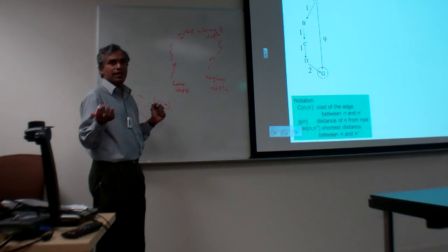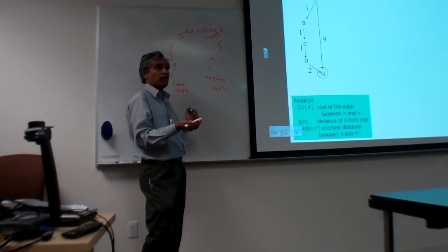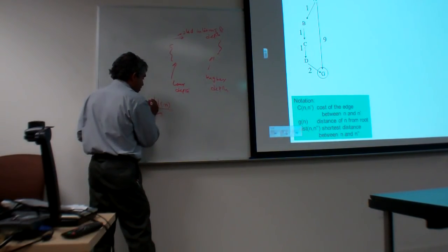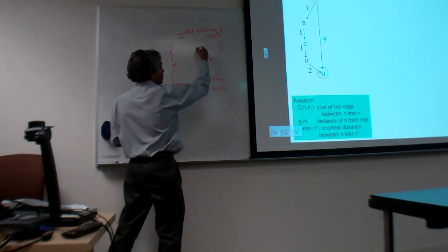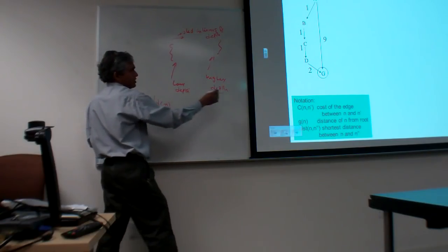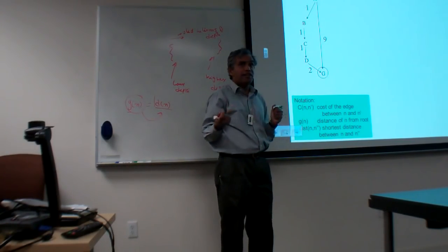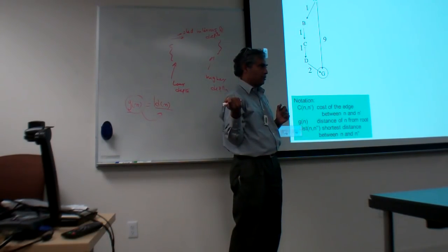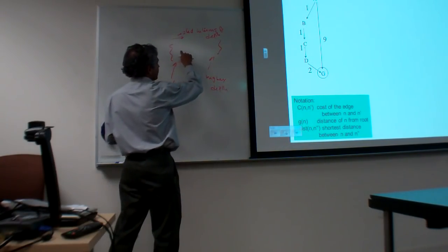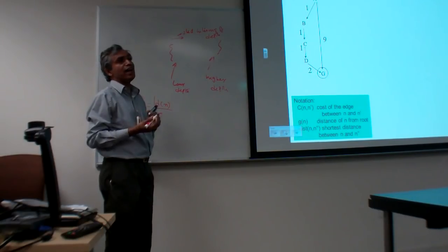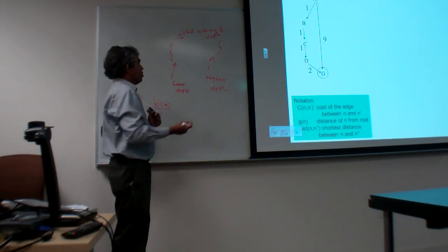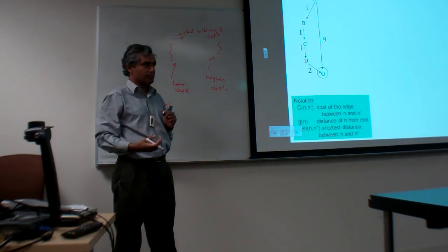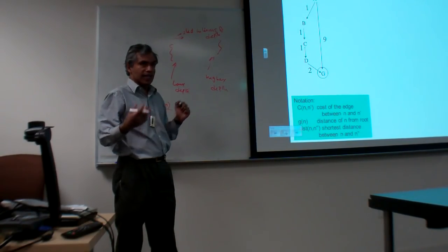The algorithm remains the same — you just re-visualized what the algorithm is doing. Now, instead of defining G of N just as the number of operators, define G of N as actually the cumulative cost of the operators. Then you basically sort the queue in terms of the G values of the nodes, such that nodes with lower G values come to the front, and nodes with higher G values go to the end. That's what we want to do.